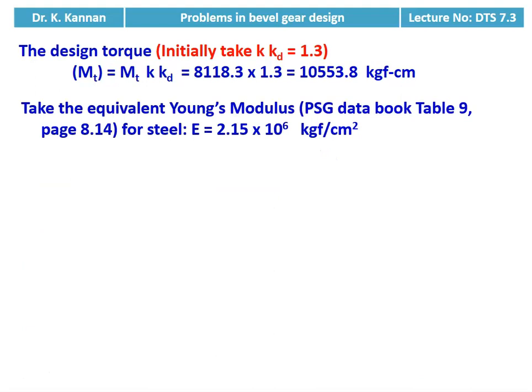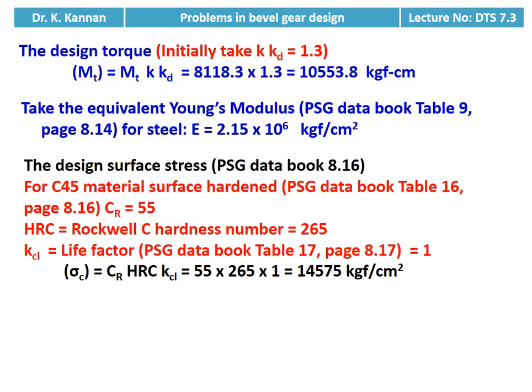We take the equivalent Young's modulus for steel: E = 2.15 × 10⁶ kgf/cm² from table number 9, page number 8.14. Then we calculate the design surface stress using the equation on page 8.16. For C45 material, coefficient CR = 55 and Rockwell C hardness number HRC = 265. The life factor KCL = 1. So sigma_C = CR × HRC × KCL = 55 × 265 × 1 = 14575 kgf/cm².